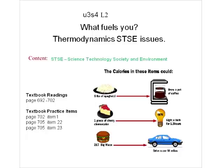There's enough energy in a piece of cherry cheesecake - with all the fat and cheese in it - to power a 60-watt light bulb for one and a half hours. And if you have 217 Big Macs, there's enough energy to drive your car for 88 miles.